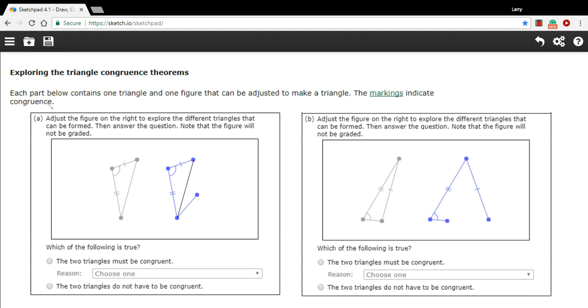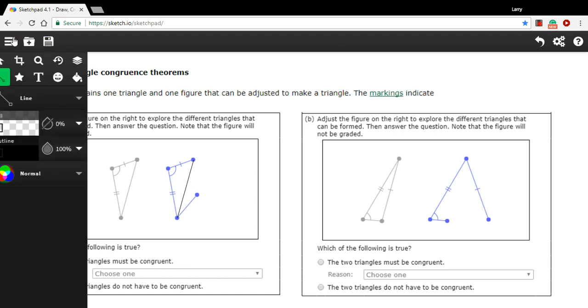What that means is if you have a side and then an angle and then a side in that order with the angle sandwiched in between the two sides that are congruent, then the triangles must be congruent.